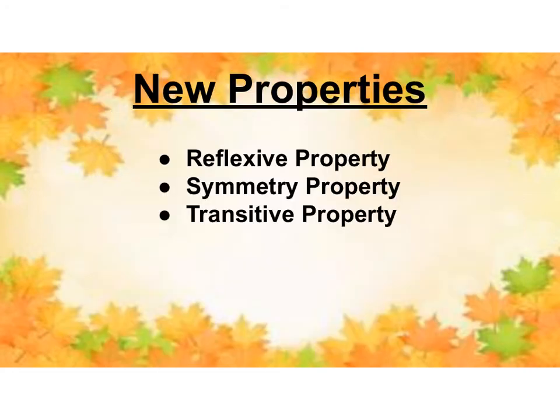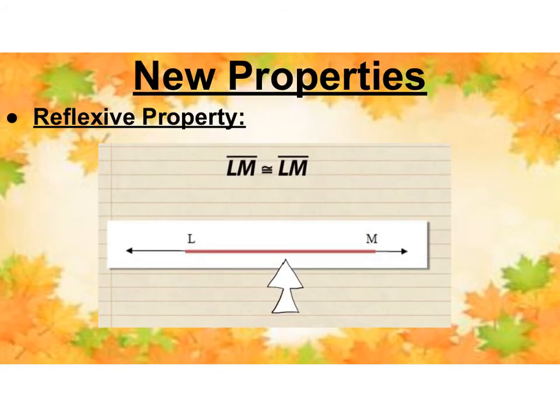Some new properties we're going to look at. You should get these in your notes. Reflexive, symmetry, and transitive. The reflexive property says that it equals itself. This one almost seems kind of silly. If I say segment LM equals segment LM, yes, of course it does. But we will be using this along the way. Not necessarily in algebraic proofs, but more in geometric proofs.